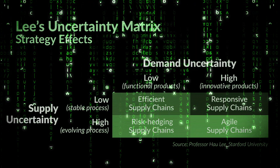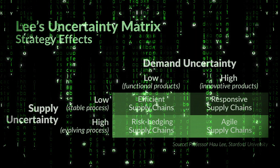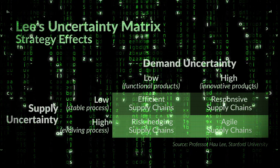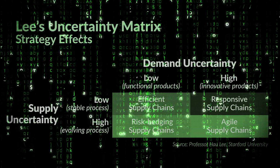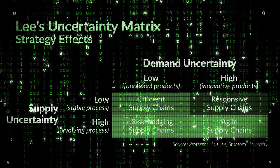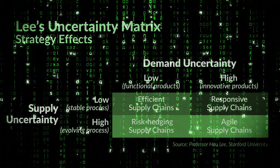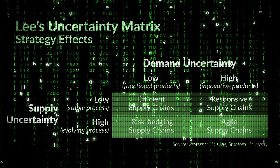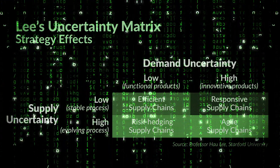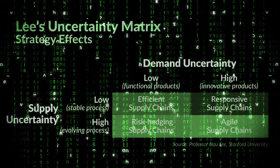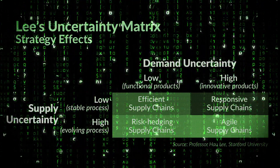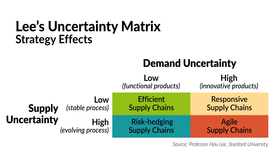On the other hand, if you understand that firms can have multiple products with various segments, each with unique supply and demand characteristics that require hybrid supply chain strategies, then the matrix becomes reality.